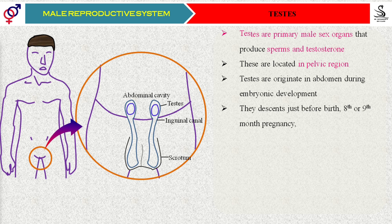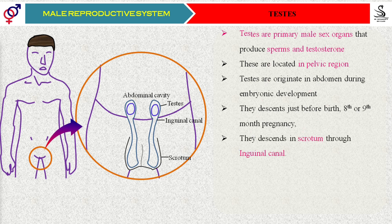How do they descend from the abdominal cavity into the scrotum? Both of those passages are called the inguinal canals. The abdominal cavity and scrotum are connected, and how they are connected is through the inguinal canals.